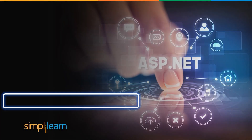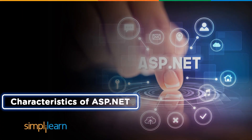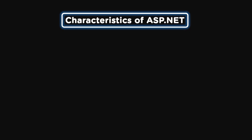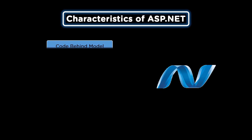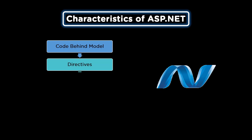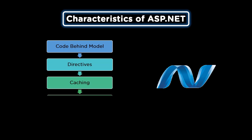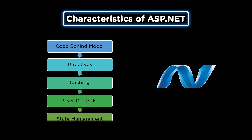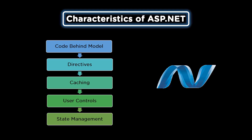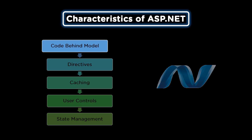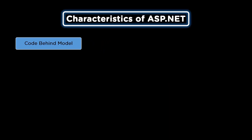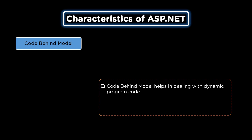Now that we know about the architecture and its components, let's have a look at some of the characteristics of ASP.NET. Here we shall see five characteristics of ASP.NET, beginning with code-behind-model, then directives, followed by caching, user controls, and state management. Let's have a look at all these characteristics one by one.